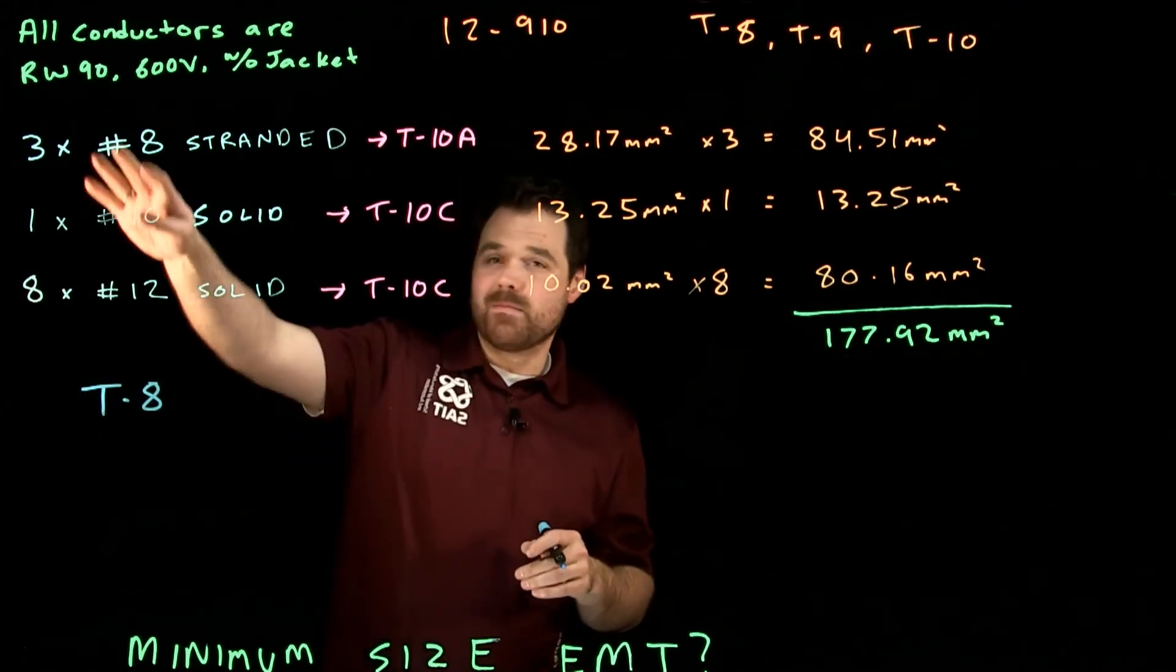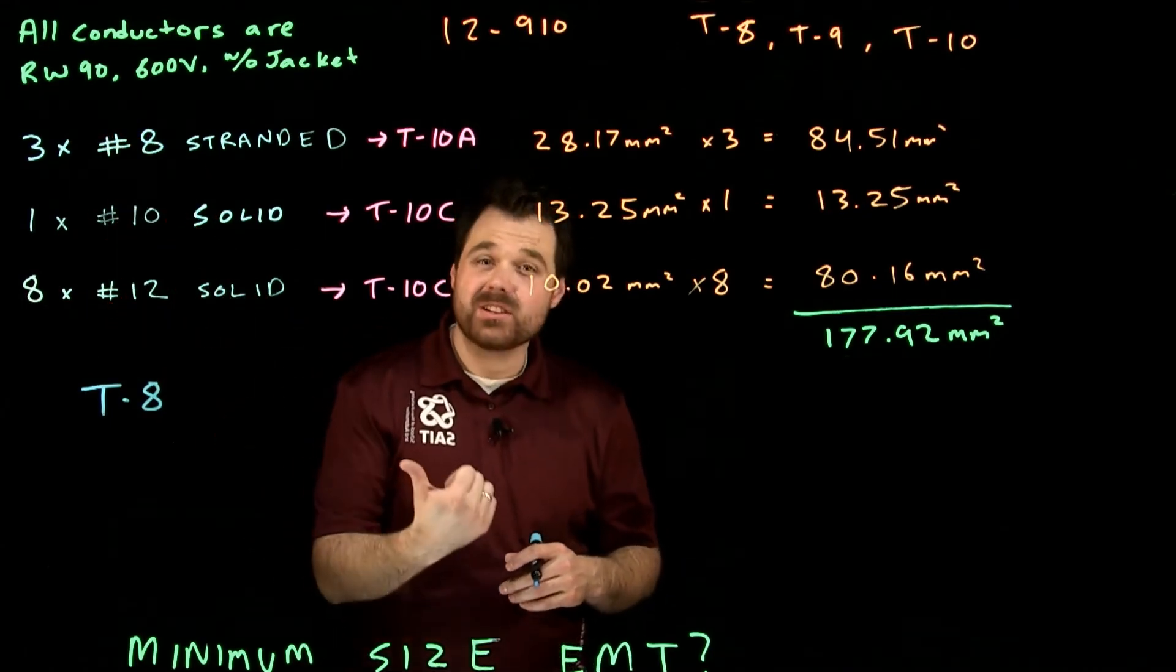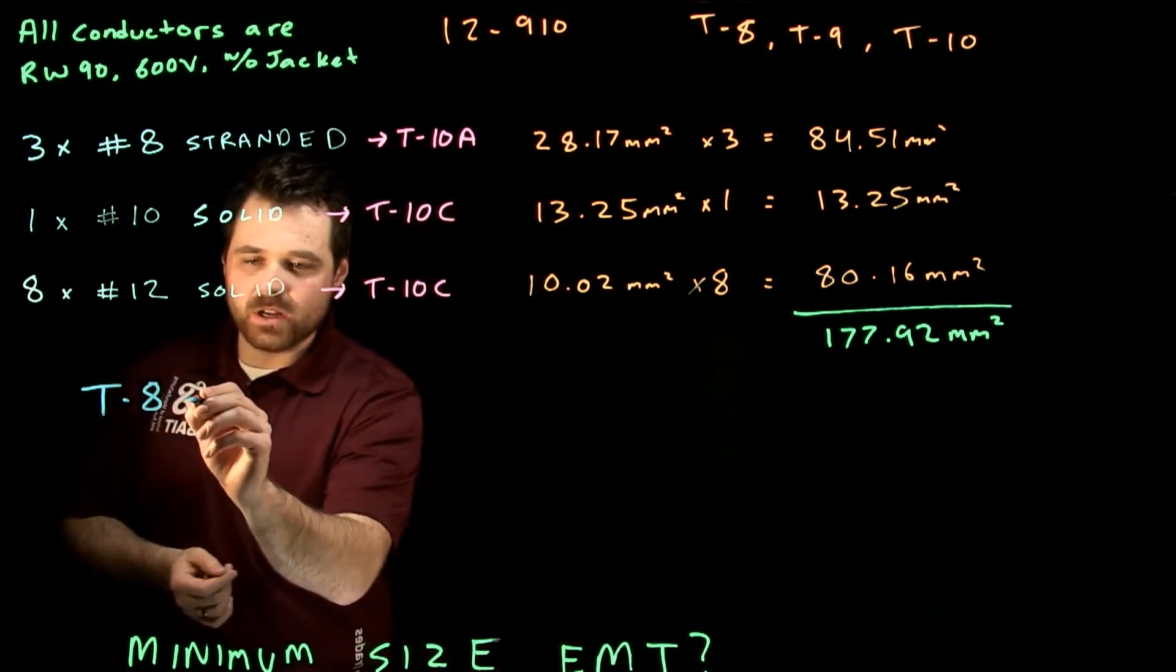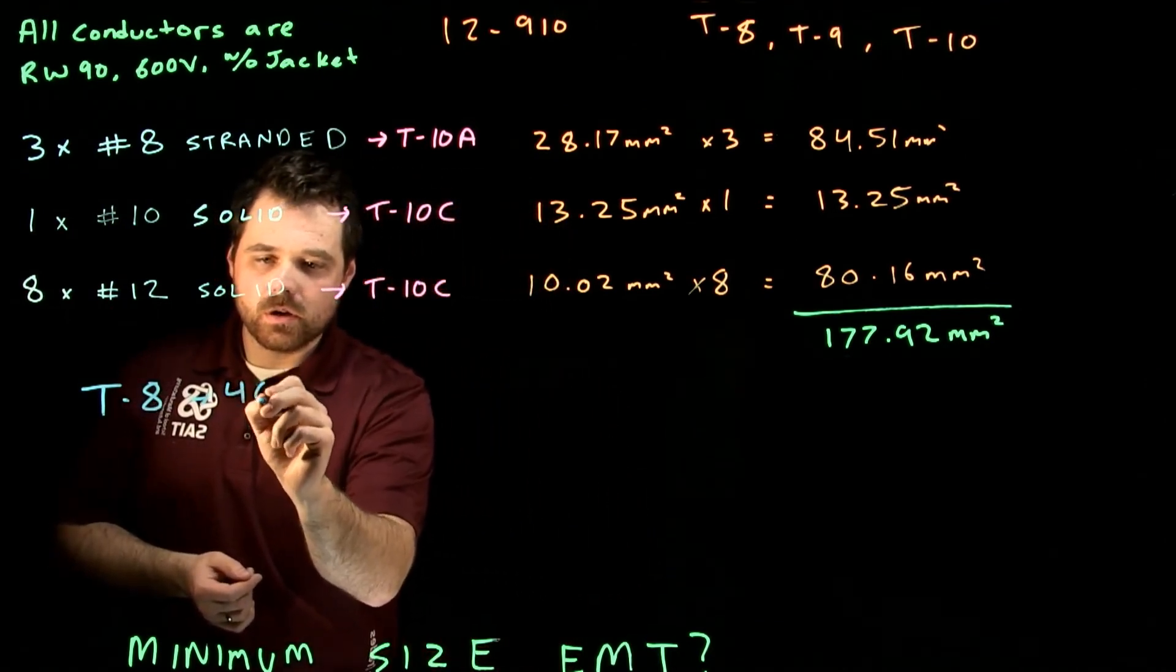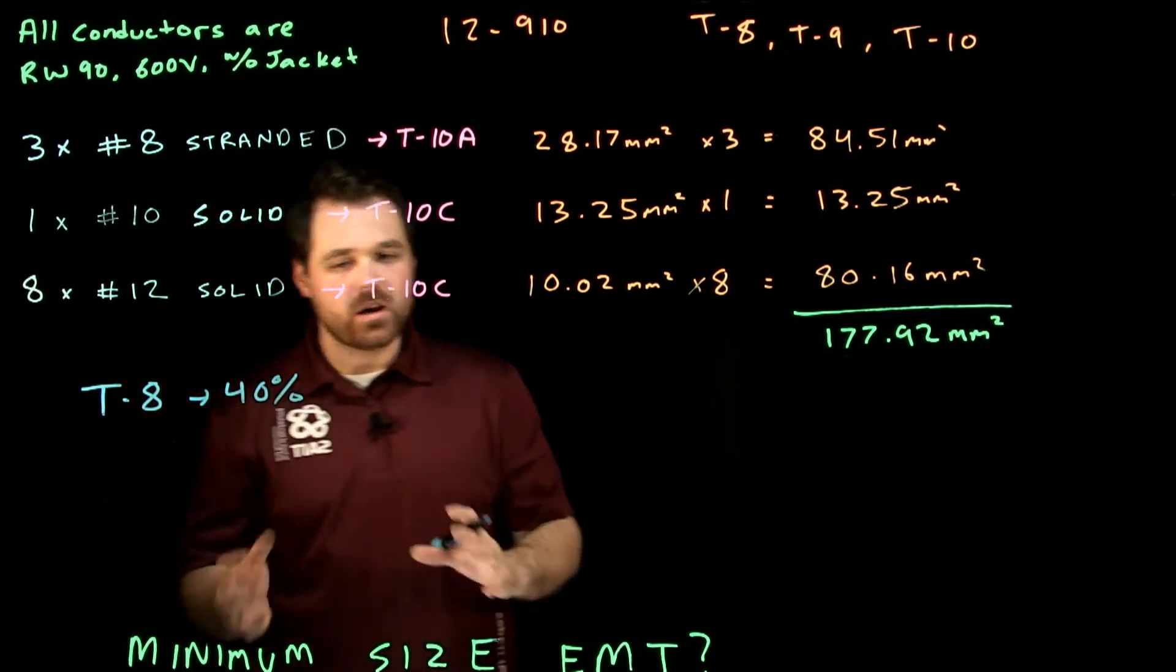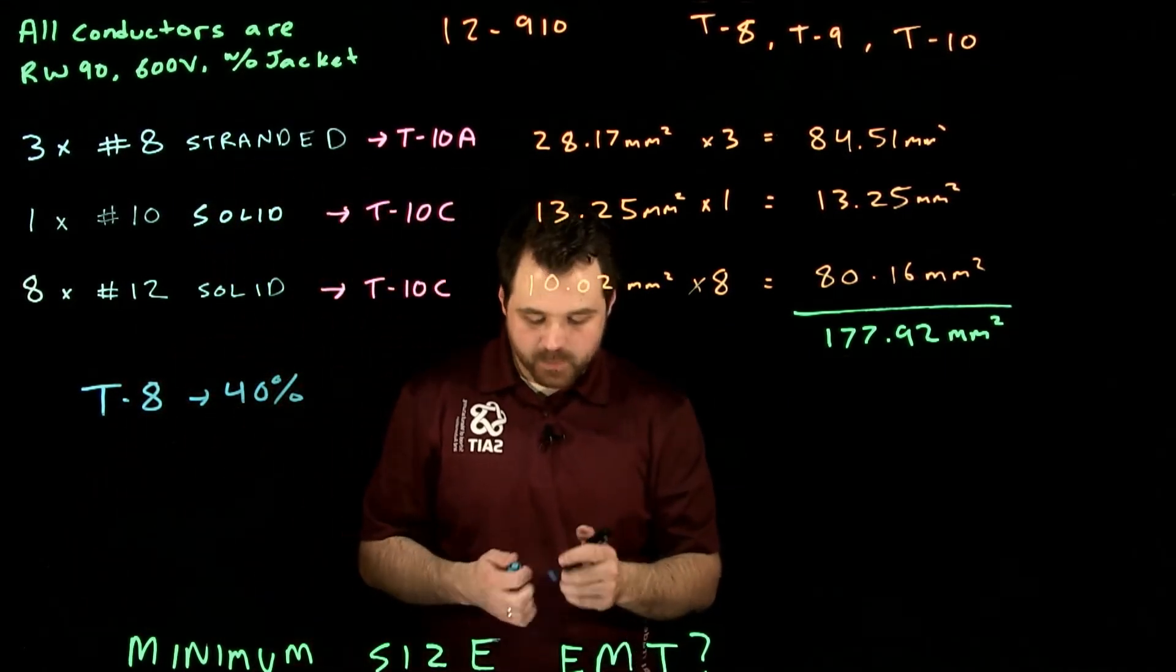So because we have more than four conductors, we're using a non-lead sheathed conductor. Table 8 tells us we can go 40% full. So my conduit can be up to 40% full. Perfect.